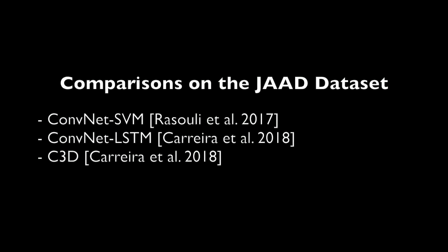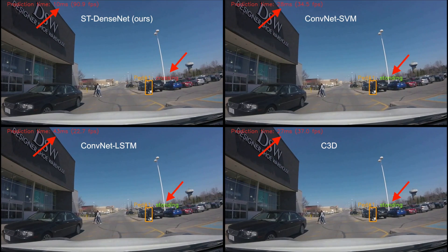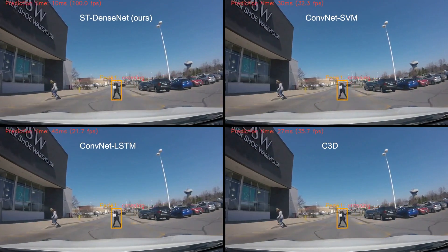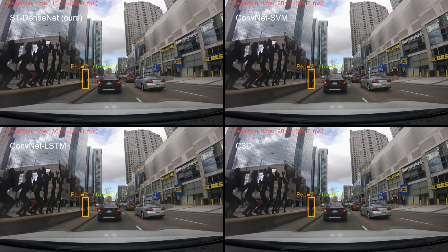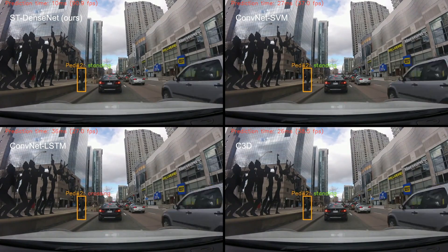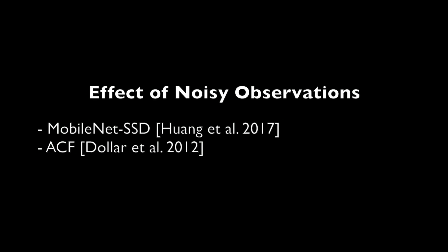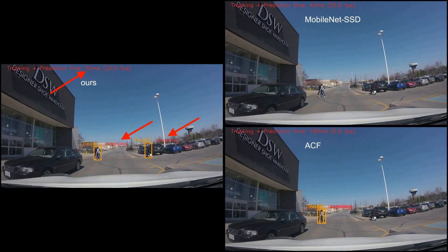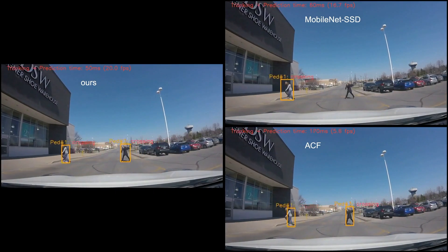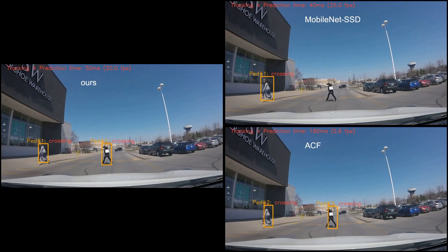Here we evaluate our spatiotemporal DenseNet in comparison to three baseline models using the tracking annotations from the JADE dataset. Notice how early and fast our predictions are in comparison to the baseline models, and how fast and stable our predictions are in comparison to the baseline LSTM model. We also evaluate our framework against noisy observations from two different object detectors instead of our YOLO v3 model from the multi-pedestrian tracking stage. Notice how the prediction of our framework is quite resilient with real-time performance of 20 frames per second. It can also be noted that high noisy observations from the baseline object detectors affect the timing of the intent predictions.